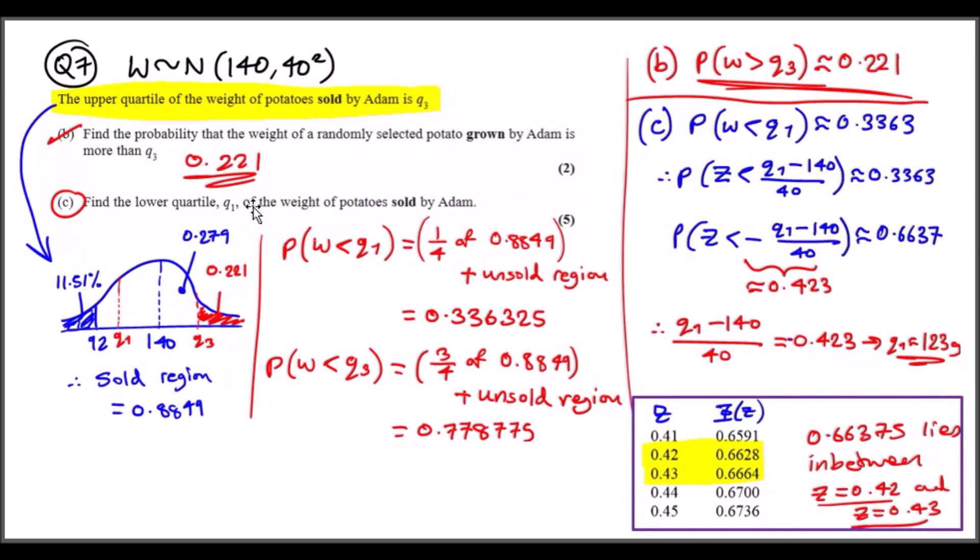Now we find the value Q1. Always update your bell curve. We just found that the area beyond Q3 was 0.221. This means that the region between the mean and Q3 must be 0.279 because we know all of this adds up to half or 0.5. Now to find Q1, we're going to use our result from part b. We've got the probability that W less than Q1 is 0.3363. Let's convert that to the standard normal Z form: Q1 minus the mean over standard deviation, still equal to the probability.